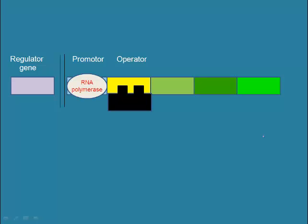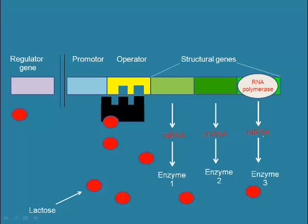If lactose is present and glucose is not, the enzymes for lactose breakdown will be available when lactose itself inhibits the repressor protein. This summarizes the lac operon and how it functions to control the production of enzymes for lactose metabolism.